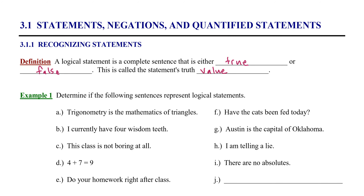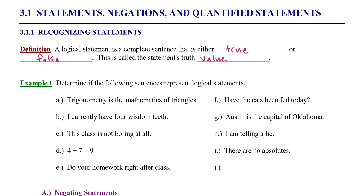Logical arguments are built on statements. In example one, we're going to practice recognizing statements. Determine if the following sentences represent logical statements — the way we determine that is to identify the truth value. If it's true or false, it is a logical statement. Example A: trigonometry is the mathematics of triangles. That's true, so we would say this sentence is a logical statement.